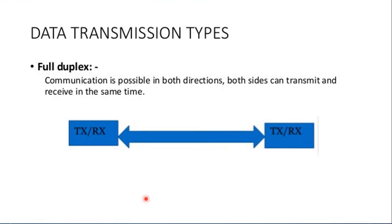The third type is full-duplex. If data can be transmitted and received simultaneously, it is known as full-duplex communication. The transmitter as well as receiver are present on both sides, so at any time the transmitter or receiver can send or receive information. Communication is possible in both directions simultaneously — both sides can transmit and receive at the same time. That type is called full-duplex.